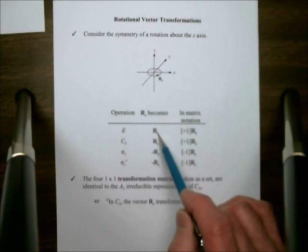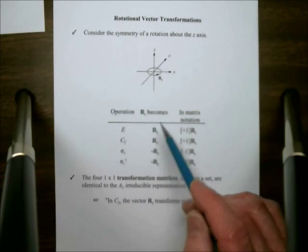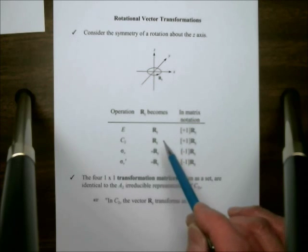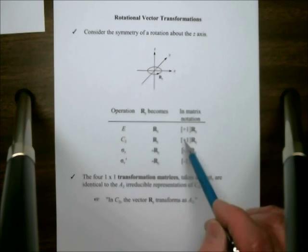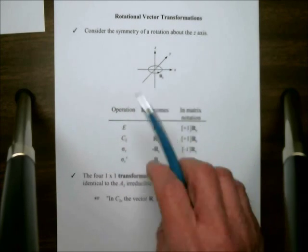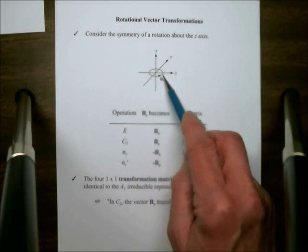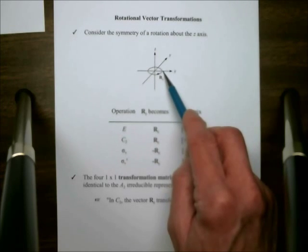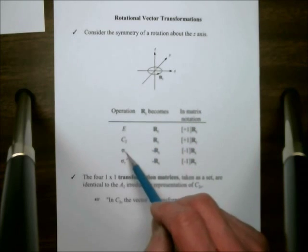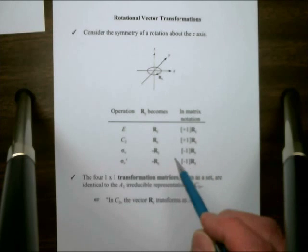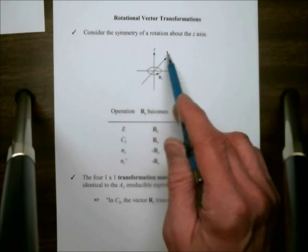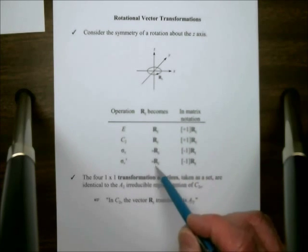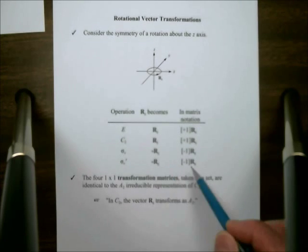Under E, Rz is the result, so it's a plus 1. C2 just flips it around in the same direction that it's going, it doesn't change its sense of direction, so that would be a plus 1. But now sigma v, the sigma v is the plane of the page here. Imagine this little vector coming around to the mirror plane, it would figuratively see itself coming in the opposite direction. In other words, the operation of sigma v changes the sense of rotation, so we have a minus 1. The same is true in the yz plane. The little vector would see itself as it approached the mirror plane, and so we have a sense of change of direction, minus 1.